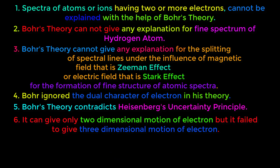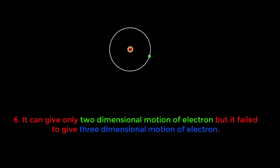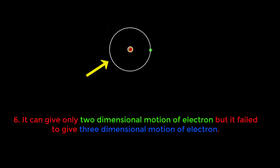The sixth limitation of Bohr's theory is that it can give only two-dimensional motion of the electron but fails to give three-dimensional motion. According to Bohr's atomic model, the electron revolves in a circular orbit around the nucleus. This circle is a single-plane circle, so the motion of the electron in this circle is two-dimensional, meaning along the x-axis and y-axis only.